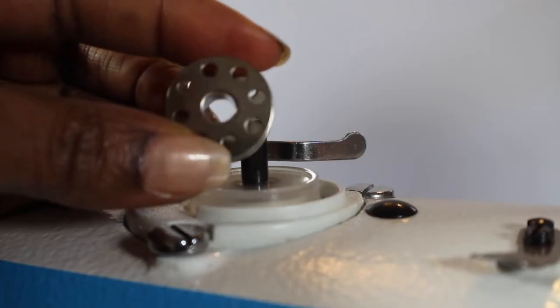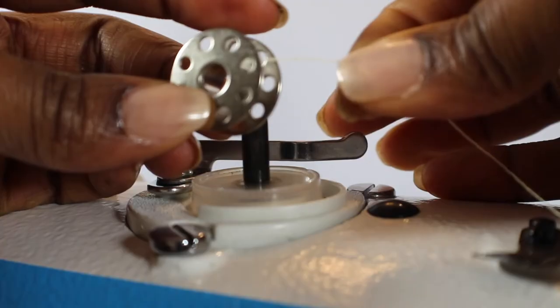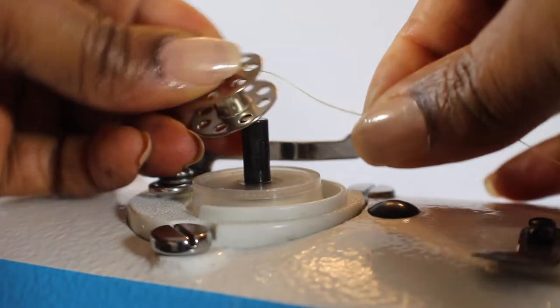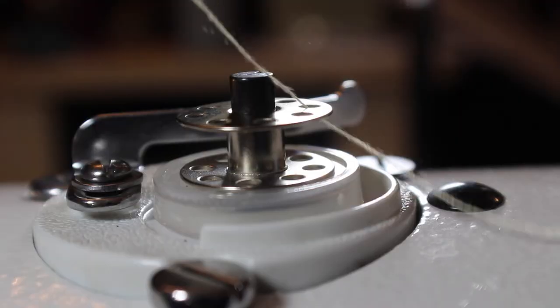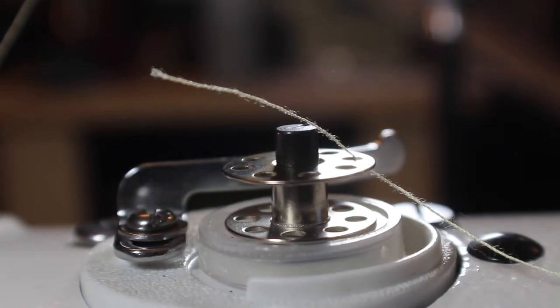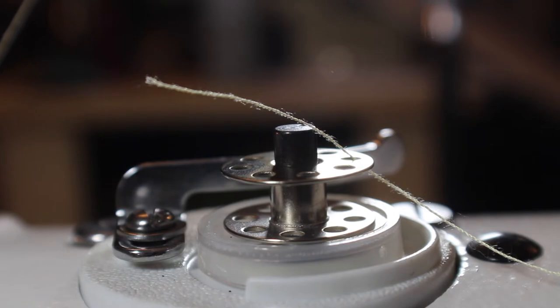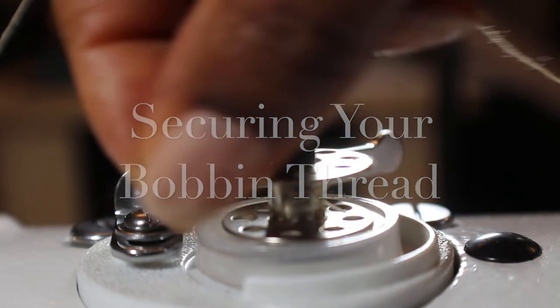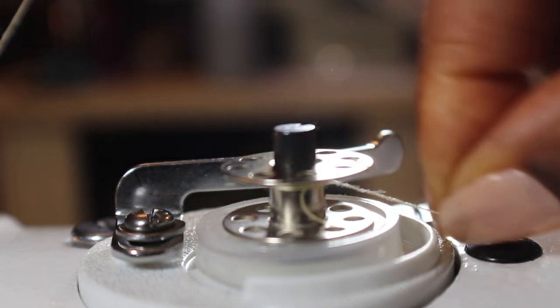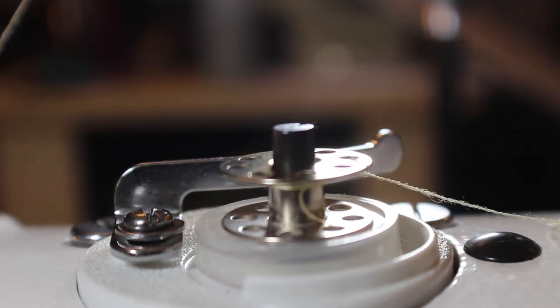So I use this bobbin because I like to put thread inside, put the thread through the hole. Now I go like this, then I wind my bobbin with that thread and it secures it around.